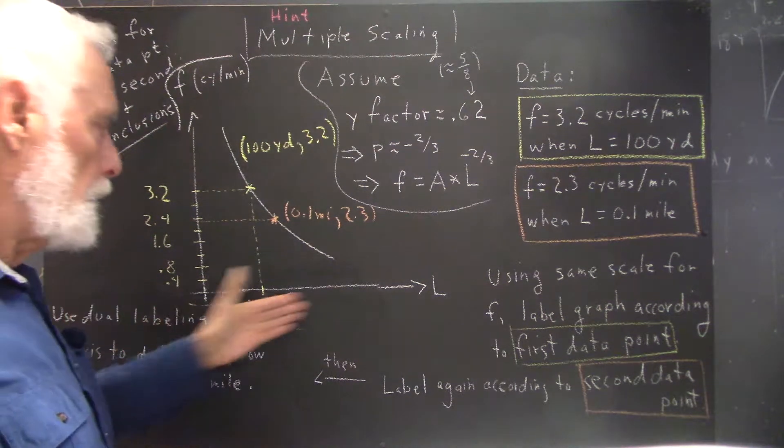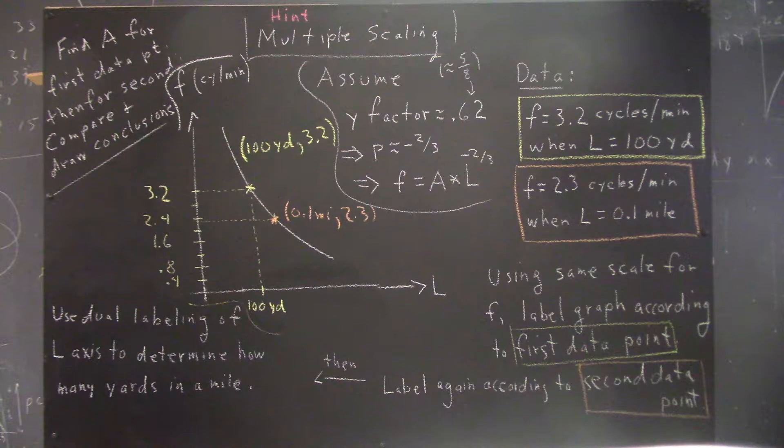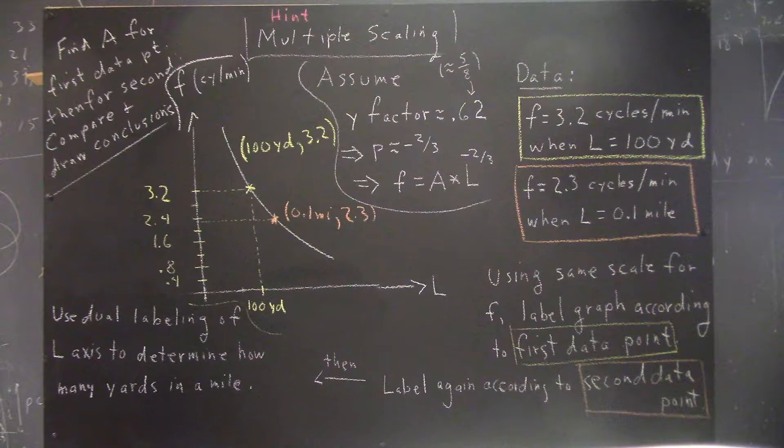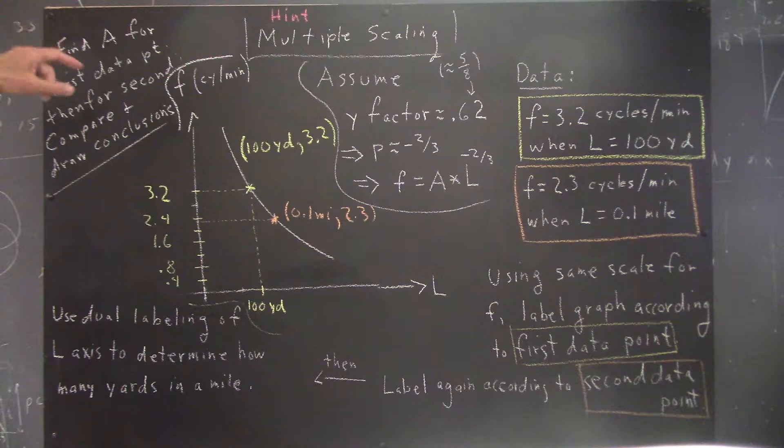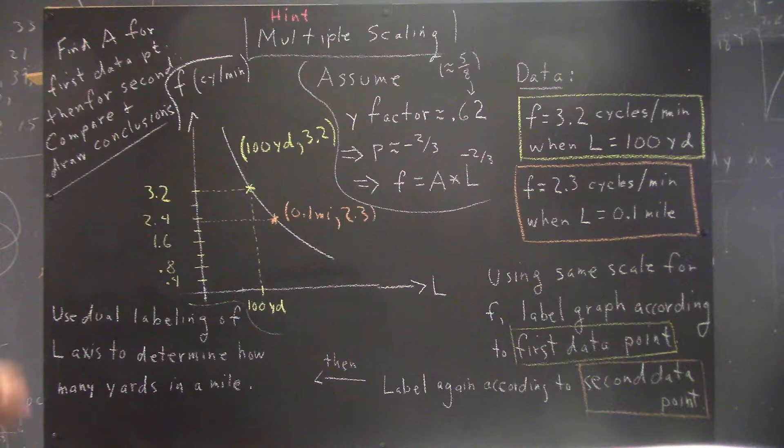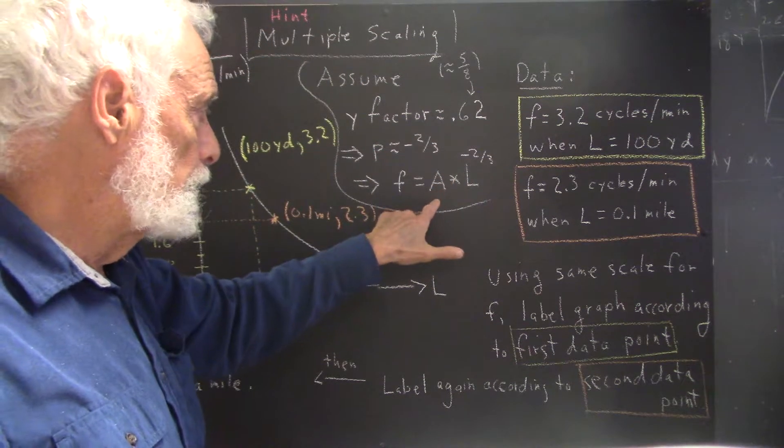And then we're going to have two labelings of the graph and we should be able to look at those two labelings and determine how many yards there are in a mile. And you're still left with the idea of finding A for the first data point and then for the second, and comparing and drawing conclusions. I'm not going to give you a whole lot of hints on that. That's something we've done. You simply plug your data into this form and you can get A.